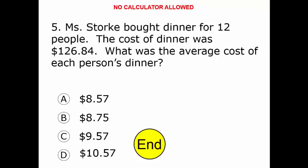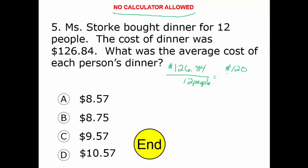Ms. Stork bought dinner for 12 people. The cost of the dinner was $126.84. What's the average cost of each person's dinner? You're going to think of this as a unit rate problem, where you have $126.84 per 12 people. We need to figure out the fastest way to get to the cost. You could divide 126.84 by 12, but remember you don't have a calculator. So we're going to use estimation. I'm going to drop this down to $120 and divide it by 12 — that we can do in our head. That's $10 a meal. It's actually going to be slightly more because we forgot to include the $6.84. Looking at the answers, it's got to be more than $10, so A's out, B's out, C's out — and here's our choice, letter D.